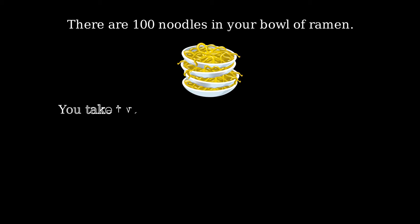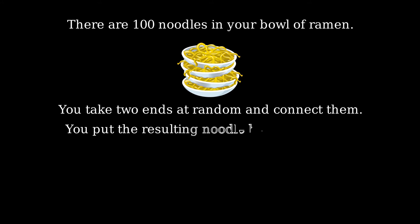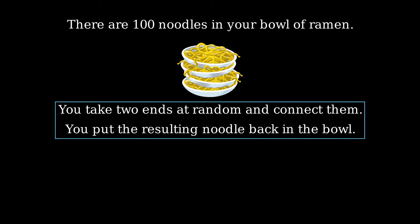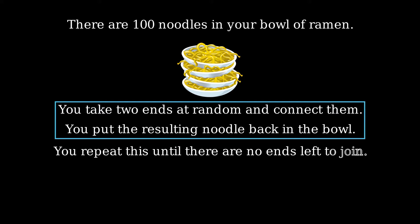There are a hundred noodles in your bowl of ramen. You select two of their ends randomly and connect them, then put the resulting, maybe deformed, noodle back in the bowl. You repeat the process until there are no ends left to join. On average, how many circles will you create? For simplicity, provide the answer approximated to the closest integer.